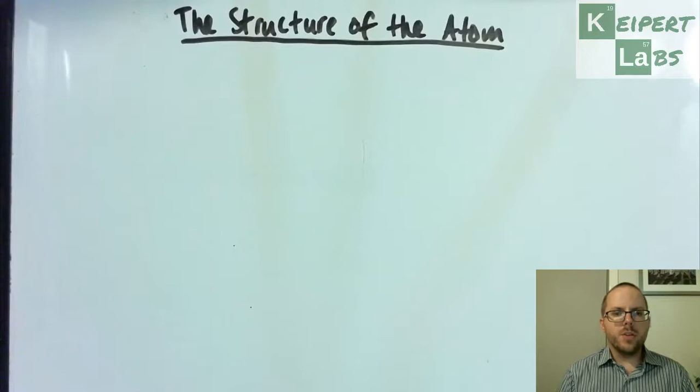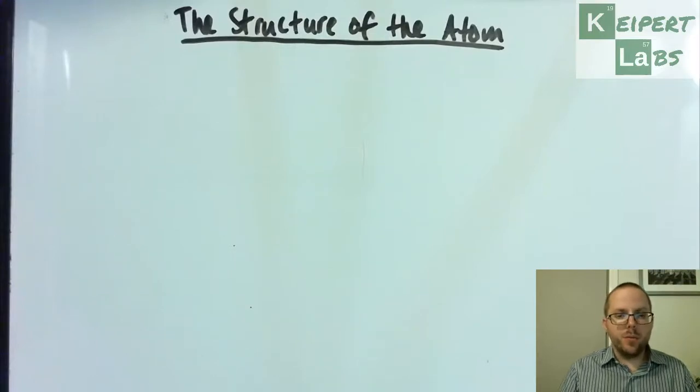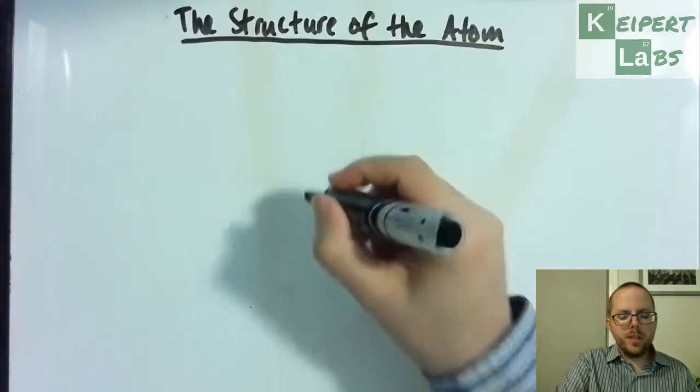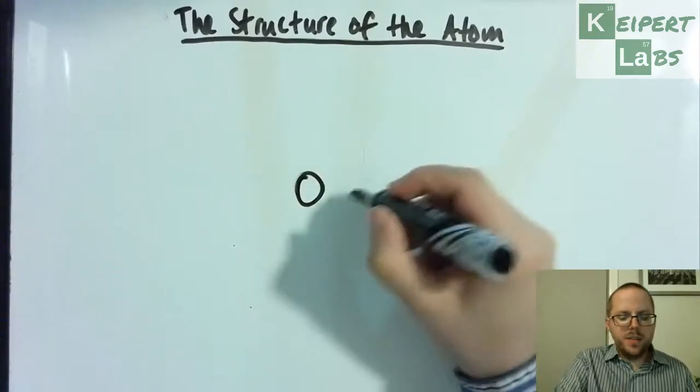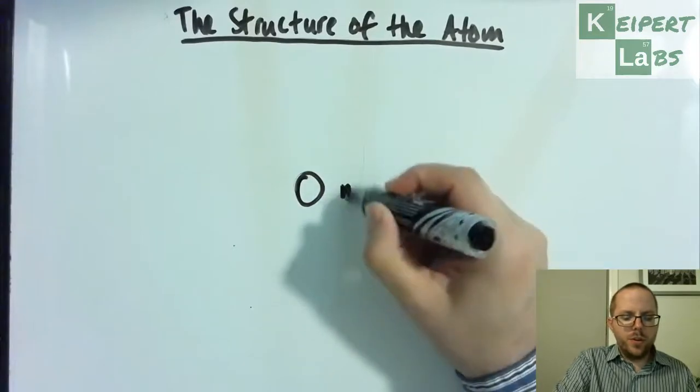So thinking a little bit more generally, just as an introductory picture of how an atom looks and some of the general parts. Okay, so an atom has a center, and this center we call the nucleus.